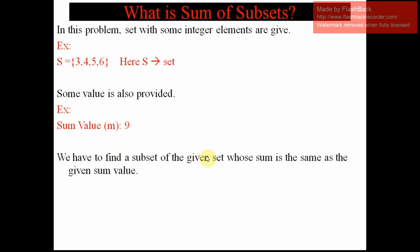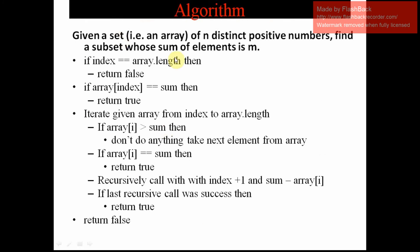We have to find a subset of the given set whose sum is equal to the given sum value. For example, taking the subset {4, 5}, the sum is 9, which equals the given value. Similarly, the subset {3, 6} also sums to 9. So the answers are {3, 6} and {4, 5} — these are the subsets whose sum matches the given value.